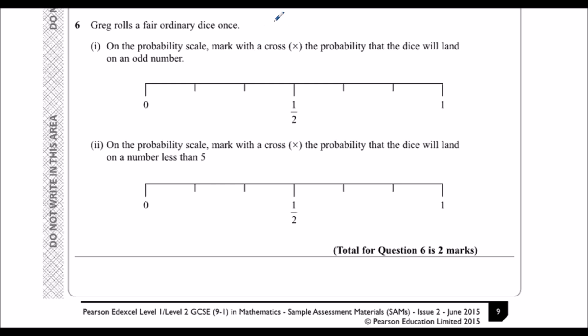So on a dice you should know there's one, two, three, four, five, and six.